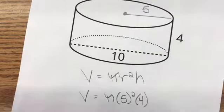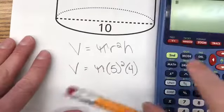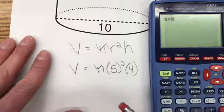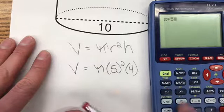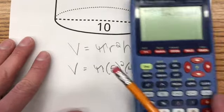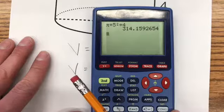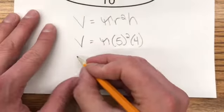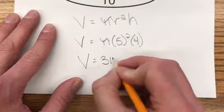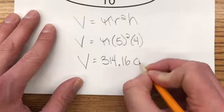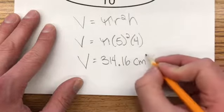Throw that into a calculator, and you get pi times 5 squared times 4. That gives us 314.16, so V equals 314.16 centimeters cubed.